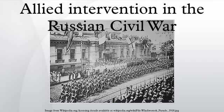The Allied intervention was a multinational military expedition launched during the Russian Civil War in 1918. The initial goals were to help the Czechoslovak Legion, secure supplies of munitions and armaments in Russian ports, and reestablish the Eastern Front.